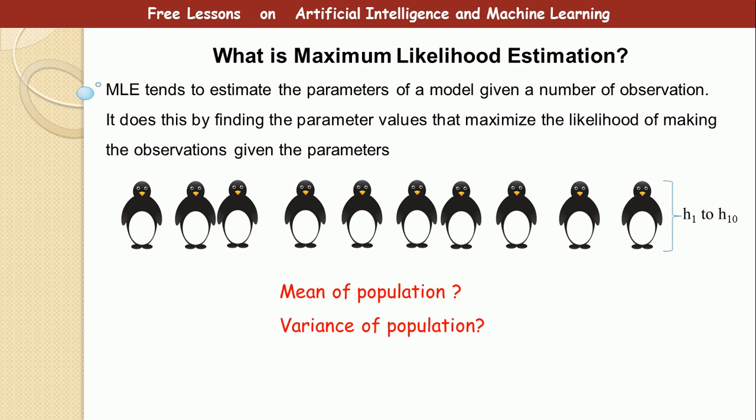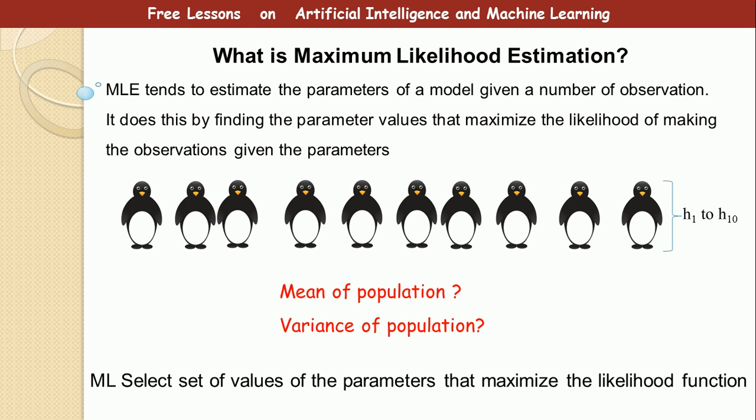What are the parameters? For instance, we have the mean, we have the variance, we have the standard deviation and many other parameters. You need to estimate these for the population, but you have just a sample. So how do you go about it? What you do is that for maximum likelihood estimation, you select a set of values of the parameters that maximize the likelihood function. Okay.